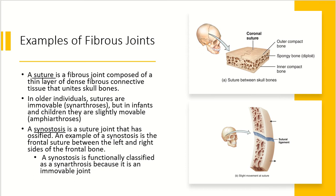A synostosis is a suture joint that has ossified — turned to bone. An example is the frontal bone suture between the left and right sides of the frontal bone. When you're young, the frontal bone is made of two separate bones, but as you age that connective tissue turns to bone. A synostosis is functionally classified as a synarthrosis because it is an immovable joint.